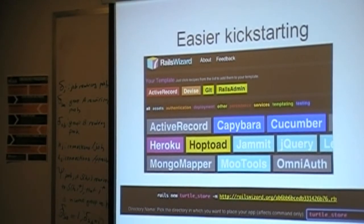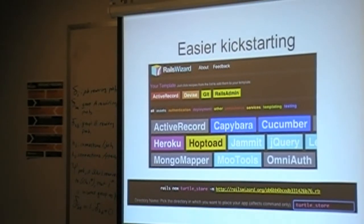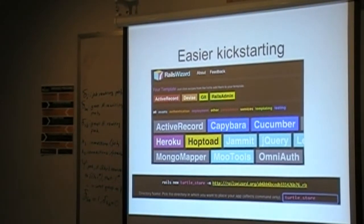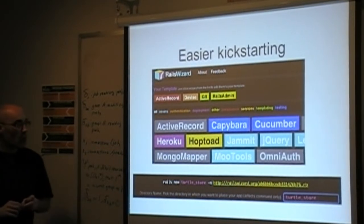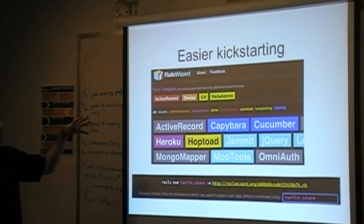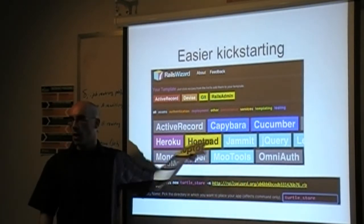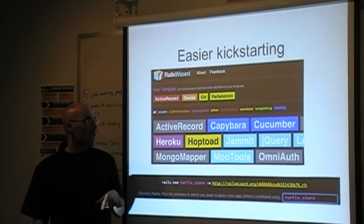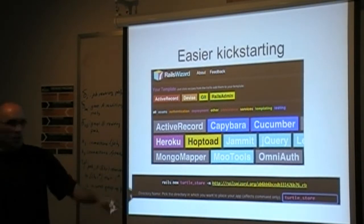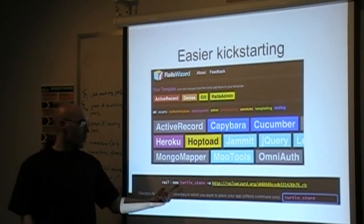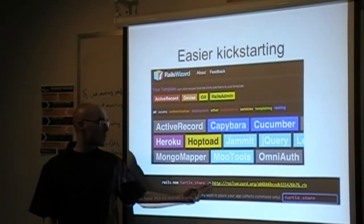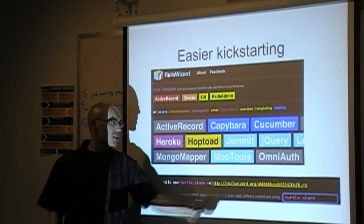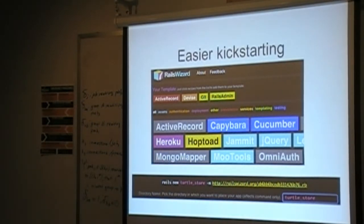The nice thing about application templates is they don't have to be local — you can run a web app that generates application templates for you. This is from railswizard.org, which I believe Intridea built. It's a nice web interface where you click buttons to say I want this for my project — active record, Devise, Git, Rails Admin. Once you push finish, you get 'rails new [project name] -m' and then a hashed URL pointing to the .rb template file up on the web. You can run this locally, pull that template down, and configure things.